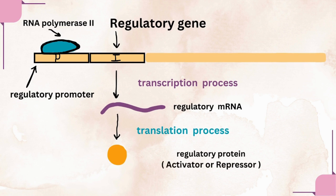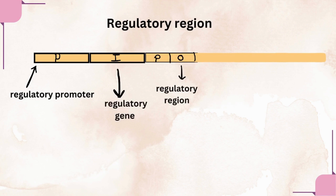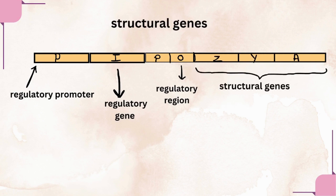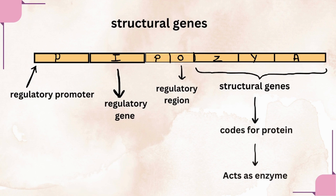The regulatory regions are the sequences of DNA where the regulatory protein binds and regulates the transcription of the structural genes. As mentioned earlier, in an operon model more than one structural gene is present. Structural genes are the ones which code for functional proteins, and these proteins act as enzymes.